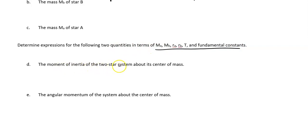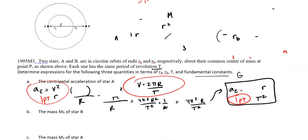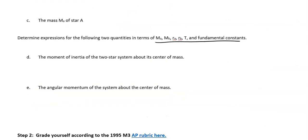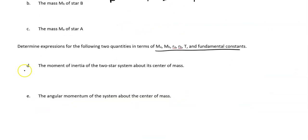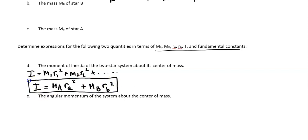Now we're going to find the following quantities in terms of all of these givens and fundamental constants. We want the moment of inertia of the two-star system about the center of mass. I look at these stars, those are point masses. They are rotating about the same point. So what I'm going to do is set up my equation for moment of inertia of point masses. That is essentially M₁R₁² plus M₂R₂² and so on and so forth.